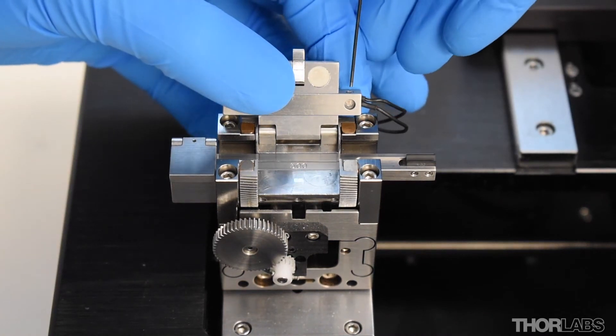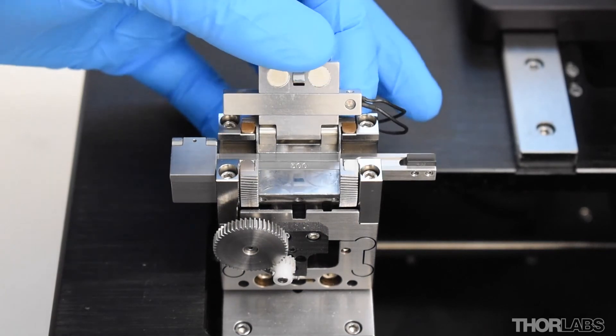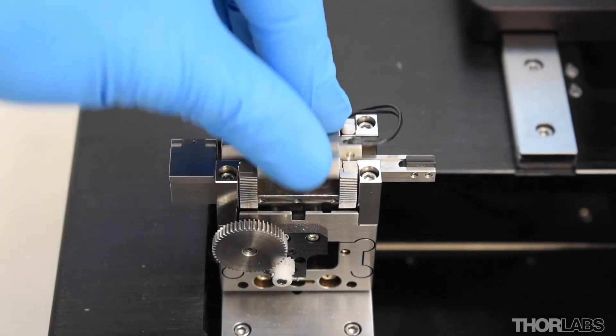Then, using a 35 thou hex key, gently tighten the LED locking set screw. Do not over tighten or the LED could be damaged.